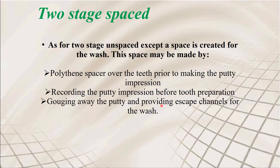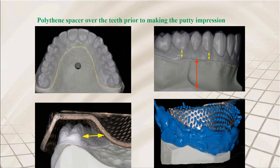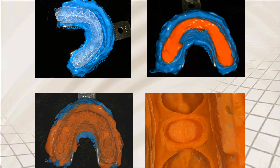Essentially, using a spacer gives you proper isolation and a clear space for the light body, which is why a spacer is placed in the middle. The sequence is: heavy body putty, then the spacer, and then the light body on top. After removing the spacer, the light body is added. This technique is highly accurate.